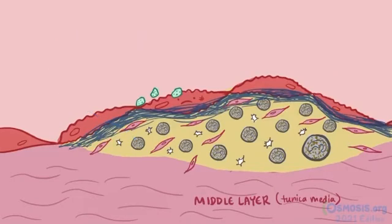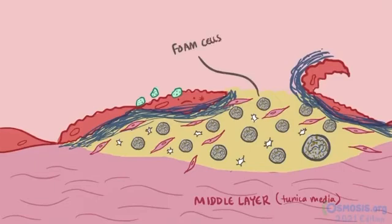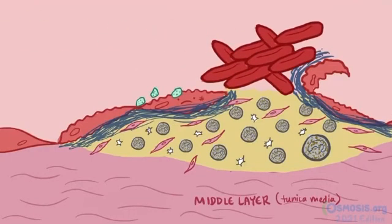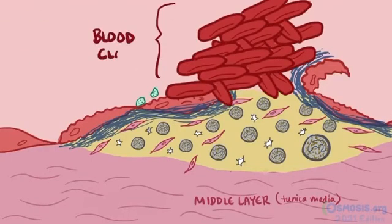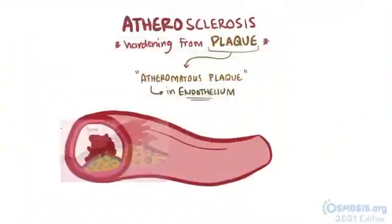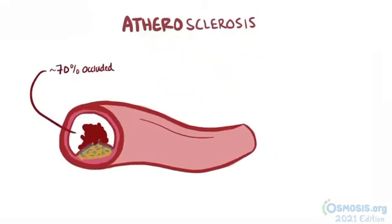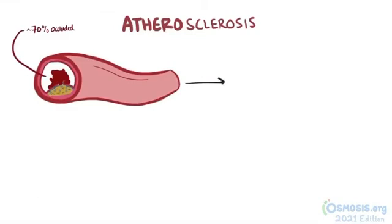From time to time, that fibrous cap can crack and expose the underlying thrombogenic foam cells to blood. This can happen randomly, and when it does, within moments you can see a blood clot start to form within the already partially occluded artery, quickly leading to even less blood being able to flow by. After about 70% of the blood vessel is occluded from the plaque and the new overlying blood clot, cell injury and death begin in the areas that were relying on that blood flow.